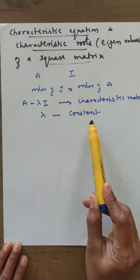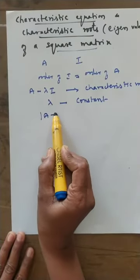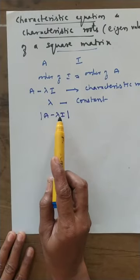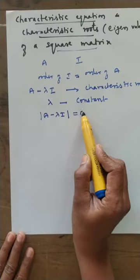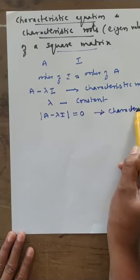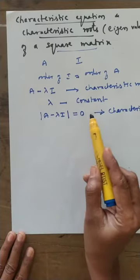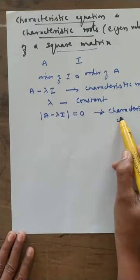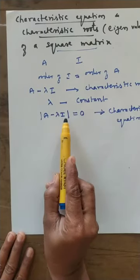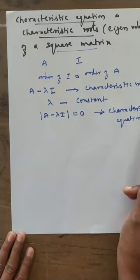Lambda is a constant. Then find the determinant value of the characteristic matrix A minus lambda I and equate it to zero. The equation determinant of A minus lambda I equals zero is called the characteristic equation.